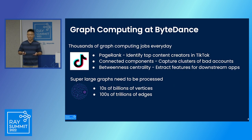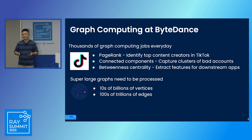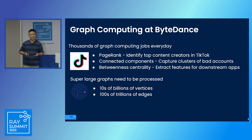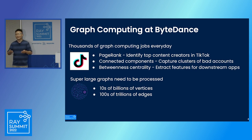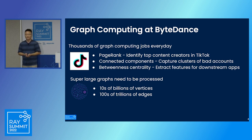We also have wide adoption in our company. We have thousands of graph computing jobs every day, a whole bunch of algorithms. For example, we use PageRank to identify the top content creators in TikTok. We have connected components to capture clusters for bad accounts and bad behaviors. And also betweenness centrality — we use it to extract features for downstream applications. All these algorithms run on super-large-scale graphs, like tens of billions of nodes and hundreds of trillions of edges.